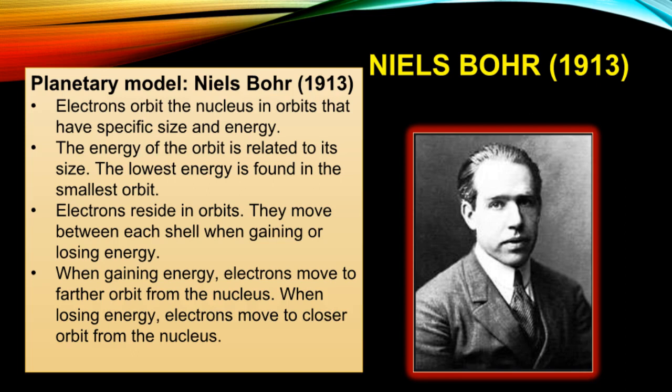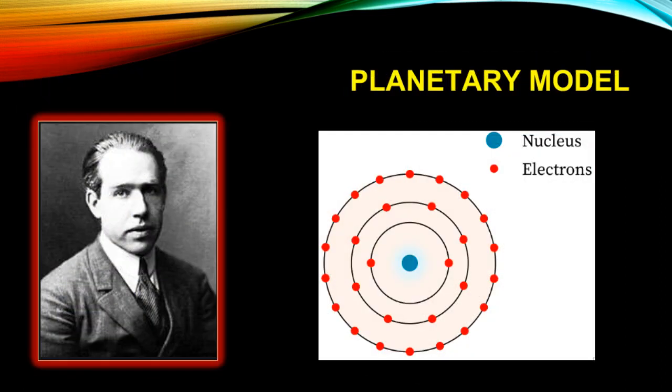The energy of the orbit is related to its size — the lowest energy is found in the smallest orbit. Electrons reside in orbits and move between each shell when gaining or losing energy. When gaining energy, electrons move to a farther orbit from the nucleus; when losing energy, electrons move to a closer orbit. Bohr created a model showing electrons moving around the nucleus in orbits, similar to planets going around the Sun.